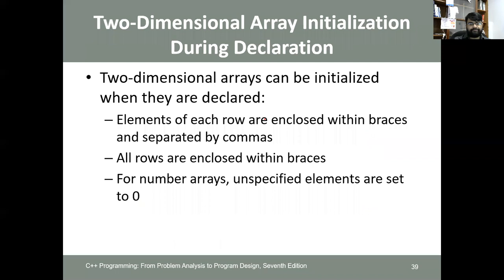Two-dimensional arrays can be initialized during declaration by enclosing elements of each row within braces separated by commas, with all rows enclosed in outer braces. For numeric arrays, unspecified elements are set to zero by default. Using enum types for indices is also supported for two-dimensional arrays — for example, using 'carType' with six values and 'colorType' with five values as the two dimensions.